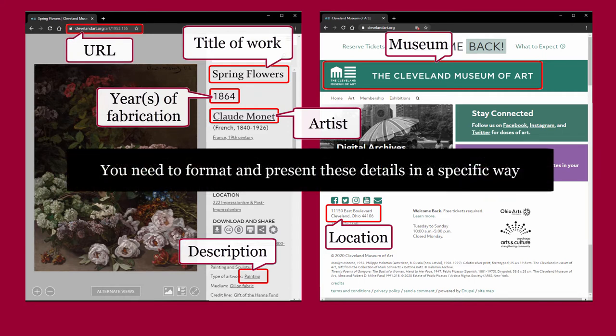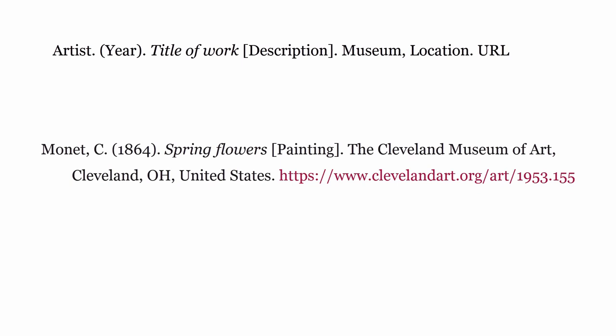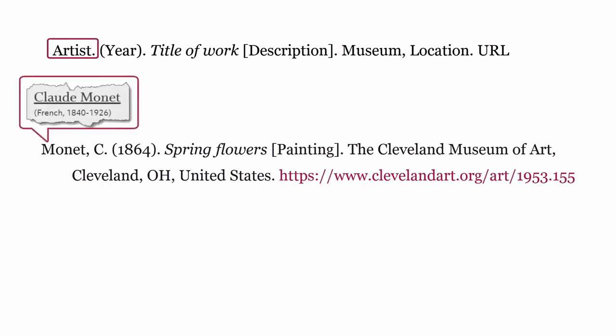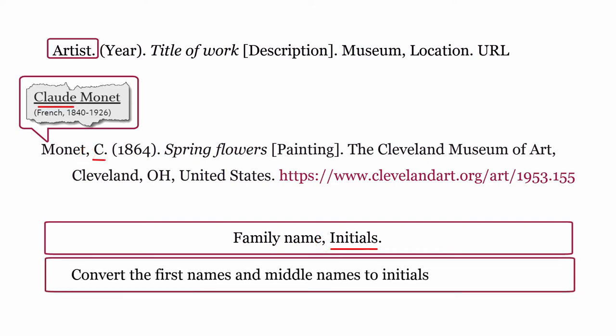You need to format and present these details in a specific way. Here's how a reference might look for Spring Flowers by Monet. The artist is formatted using the family name, comma, then convert the first names and middle names to initials and include a full stop after each initial.